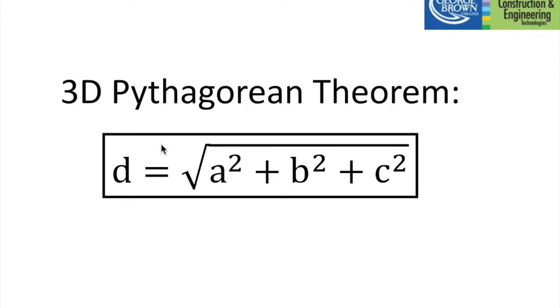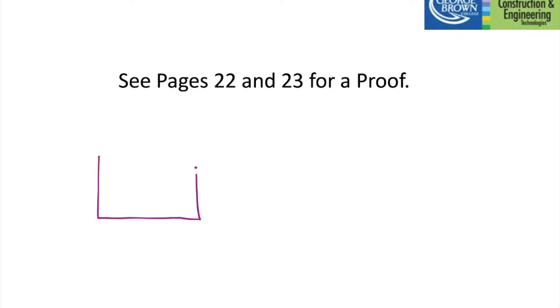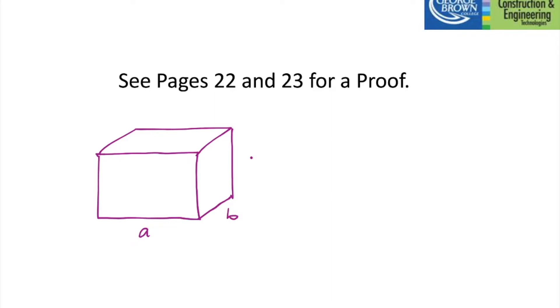What does this mean physically or geometrically? I'll do that explanation through a nice 3D diagram. If you go to the book, you can look at pages 22 and 23 for a proof. But here's my derivation on the board. I want you to start by thinking about a box. The dimensions of the box are A, B, and C — it doesn't matter which is the length, width, or height. All that matters is that there are three dimensions given.